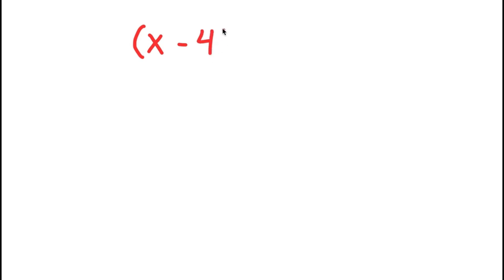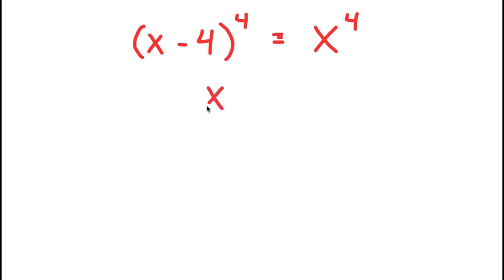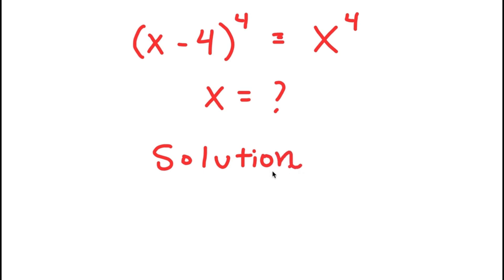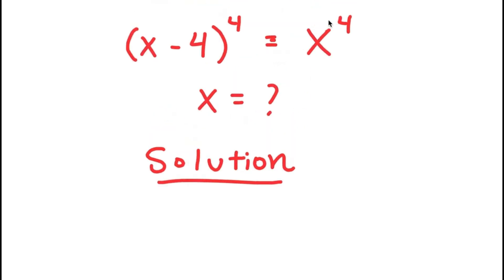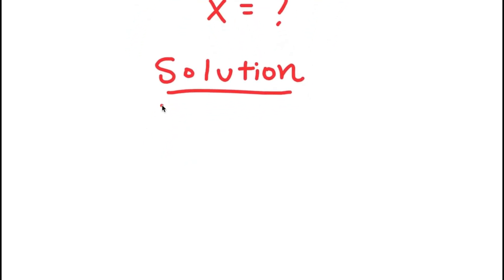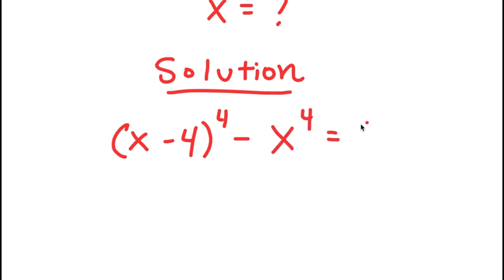Now in this equation, I have x minus 4 to the power of 4 equals x to the power of 4. My only variable is x, so that's what I'm solving for. I'll start by subtracting x to the power of 4 on both sides, giving x minus 4 to the power of 4 minus x to the power of 4 equals 0.